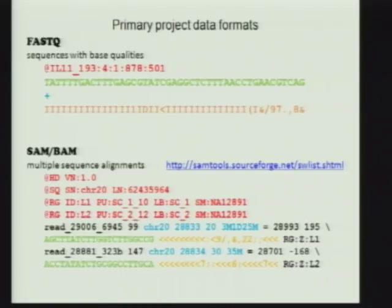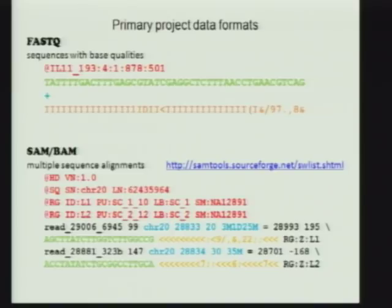Before going into how to get the data, I'd like to review a little bit more of what Gabor said — that there are three primary data types generated by the project. We have sequence, which is in FastQ format. It's a tag followed by a fragment of sequence, followed by base quality scores in an ASCII-coded system where characters represent Phred-based quality scores.